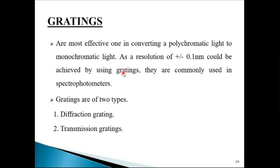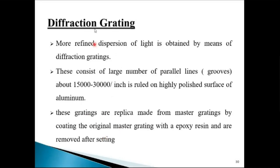In yesterday's lecture we saw that in spectrophotometers you get a wide beam of light or a broad spectra from which you need to select the wavelength for your analysis. The gratings are of two types: diffraction gratings and transmission gratings. Let us first start with diffraction gratings — more refined dispersion of light is obtained by means of diffraction gratings. When you say refined dispersion, it means the wavelengths are distinctly dispersed. These consist of a large number of parallel lines or grooves, about 15,000 to 30,000 per inch.